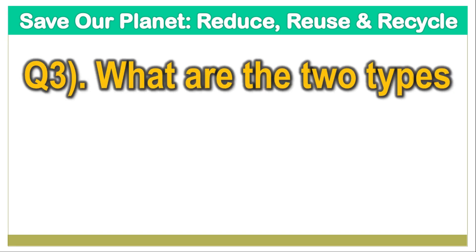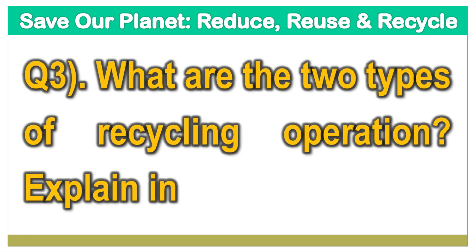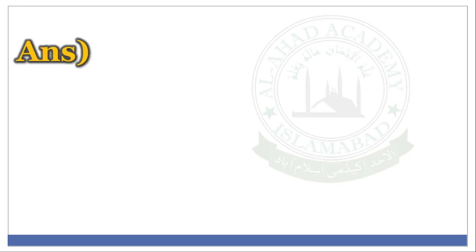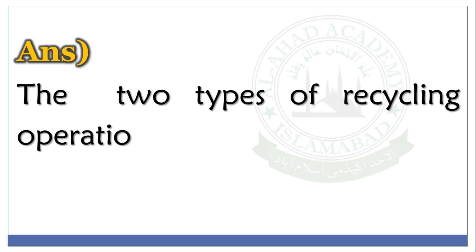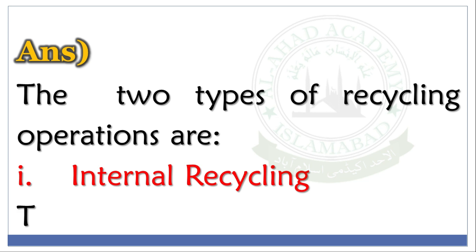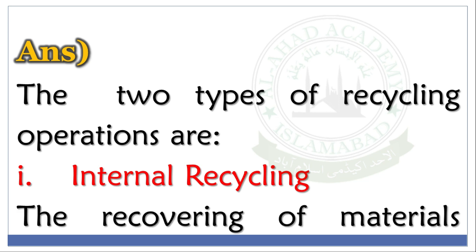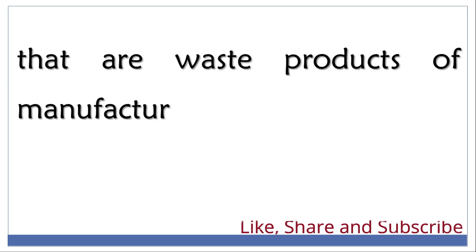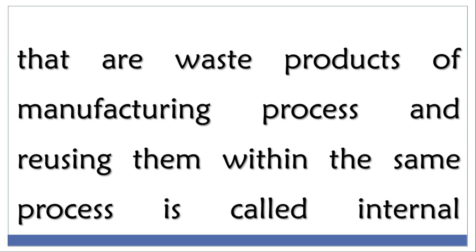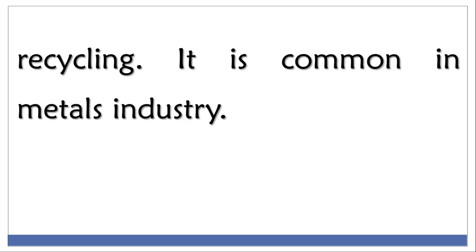Question No. 3. What are the 2 types of recycling operations? Explain in your own words. Answer. The 2 types of recycling operations are: Internal Recycling — the recovering of waste products of a manufacturing process and reusing them within the same process is called internal recycling. It is common in the metals industry.